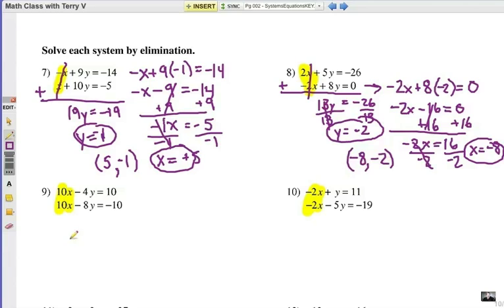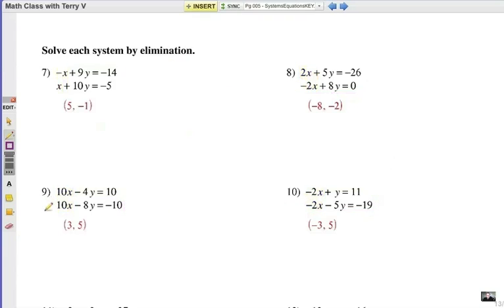You try 9 and 10 and we are going to be subtracting, so watch the signs there. We have to subtract because the signs are exactly the same the way they are now. Give it a try, hit pause, and we'll come back. You see the answer for number 9 is positive 3, positive 5, but let's prove how we get that.